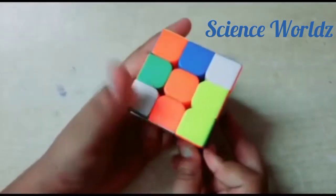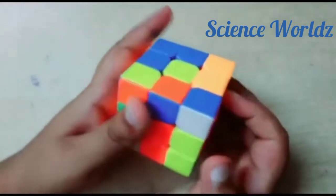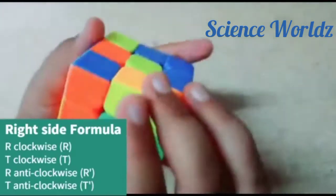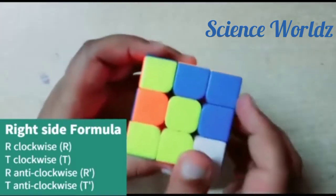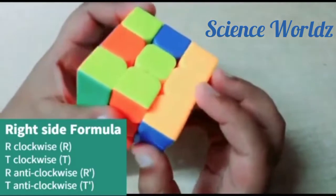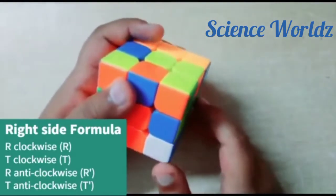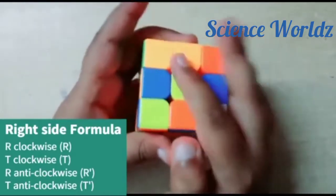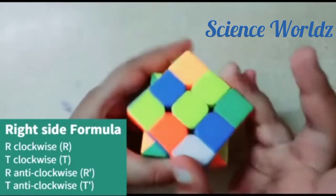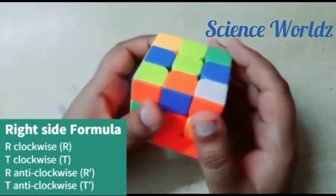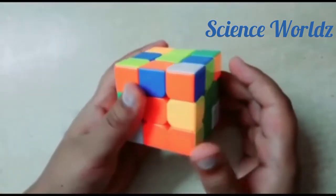Now we have done the second step. Now for the third step we need to learn a formula, which is first we need to turn this right side clockwise and this top side clockwise and right side anti-clockwise and top side anti-clockwise. In an easy way we can say that right side up, top side towards the right, right side down and top side towards the left. This is your right side formula. You must remember this formula, it is very important to solve this cube.